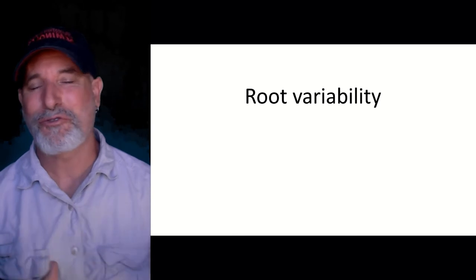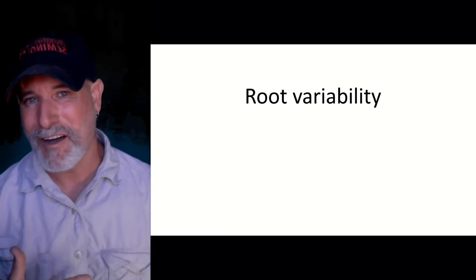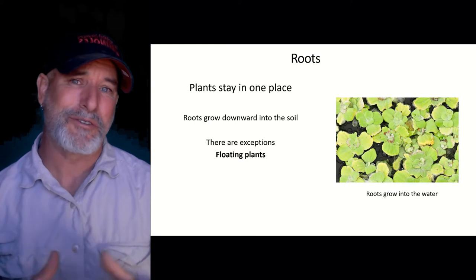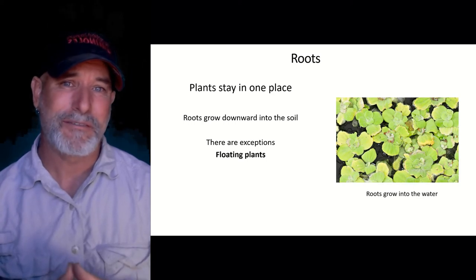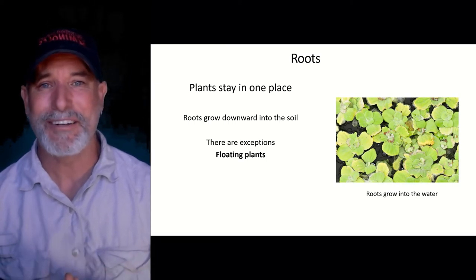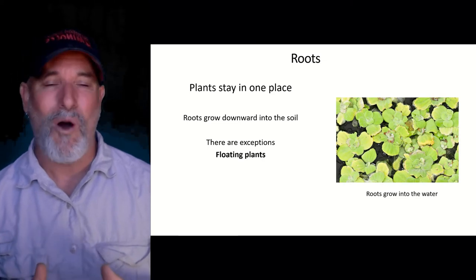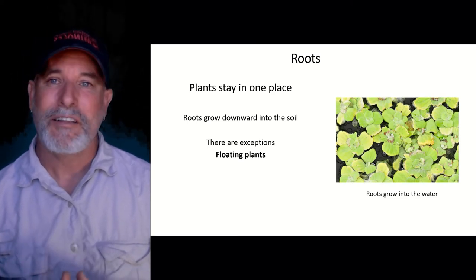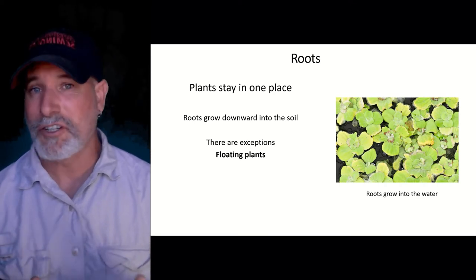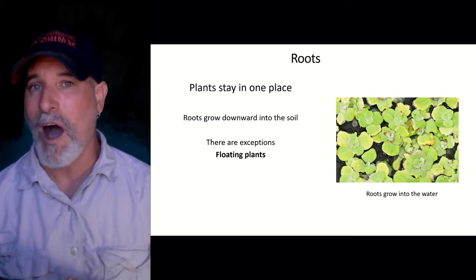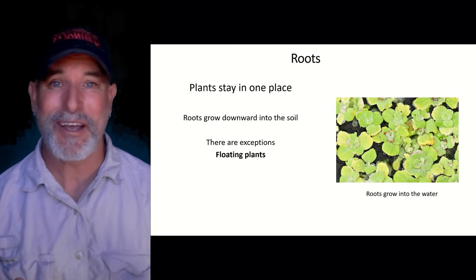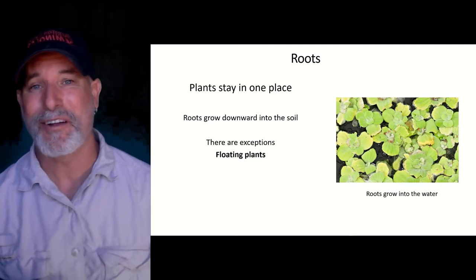There's just an incredible amount of variability among roots. We say roots help plants stay in one place because they anchor them to the soil — but not if you're a floating plant. Water hyacinth, water lettuce, duckweed — these floating plants just let their roots go down into the water, absorbing water and nutrients while the plant floats around on the surface. They're not growing into the soil.